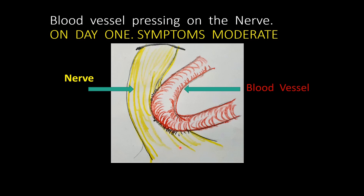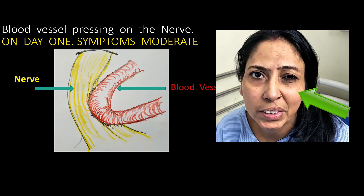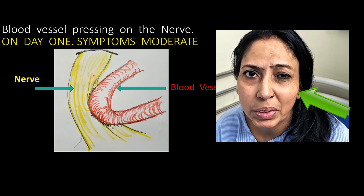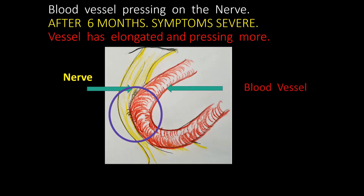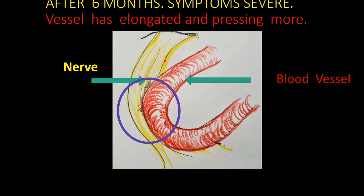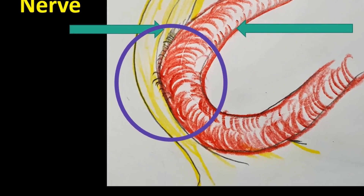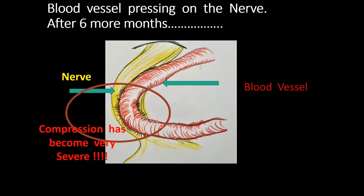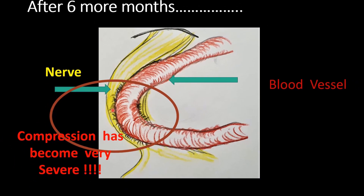The compression increases as the blood vessel continues to elongate. As you can see in this video, a blood vessel is compressing the facial nerve when the patient first presents with moderate symptoms. This blood vessel is continuously pulsating against the nerve, causing demyelination. If the patient waits or takes Botox to mask the spasms, after six to eight months the blood vessel elongates further and burrows deeper, making the spasms more severe. Left untreated, this leads to an extremely ectatic, very tortuous vessel.